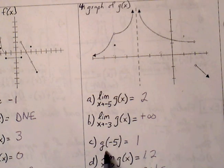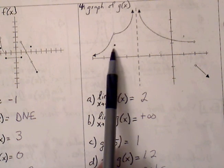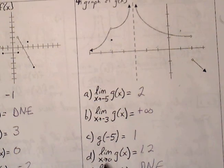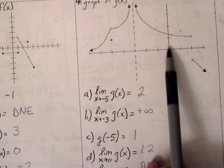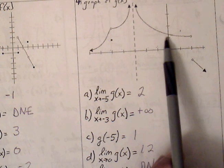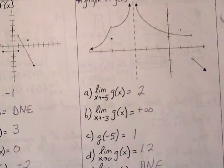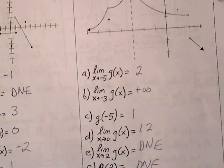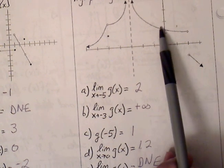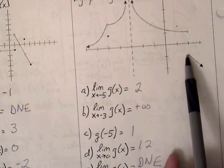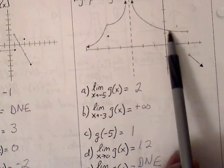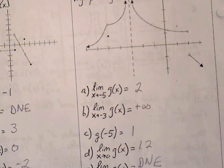g(-5) is simply the ordered pair, so g(-5) = 1. For the limit as x approaches 0, the y-value is approaching approximately 1.2. For the limit as x approaches 2, the left branch is approaching 1 while the right branch is approaching a different y-value of negative 1. There is no consistency — both branches do not arrive at the same y-value — so the limit does not exist.